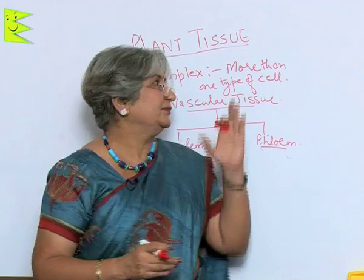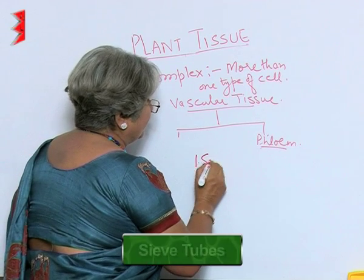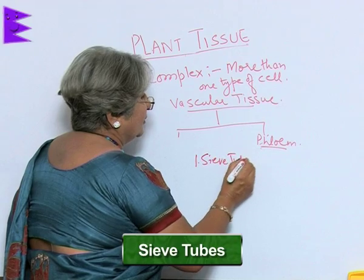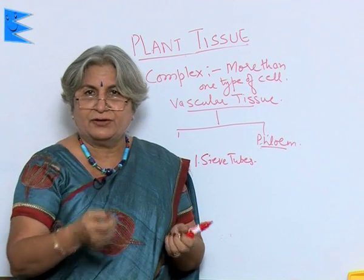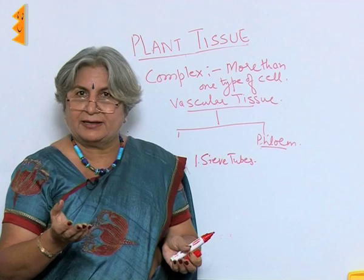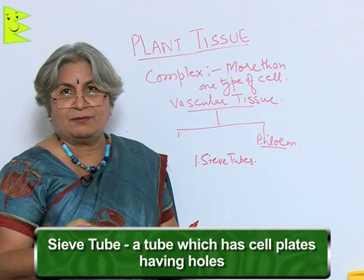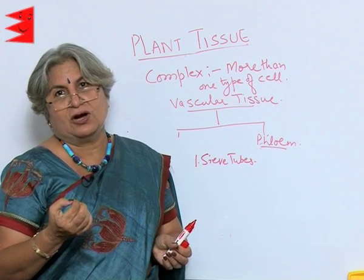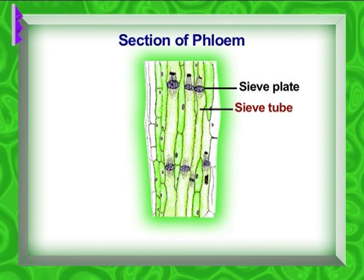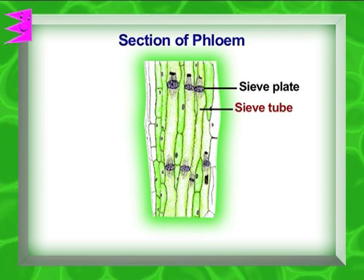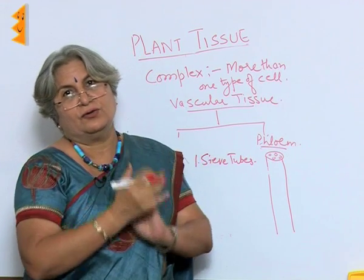How will it be transported? Phloem. Phloem is made of sieve tubes. What is a sieve? A substance, or you can say an equipment, with holes — you have a normal sieve to filter your tea or any other thing. Similarly, there is a sieve tube, which means a tube that has cell plates with holes, which are called sieve plates. Through this, cytoplasm moves from one cell to another, and along with that, food also moves.